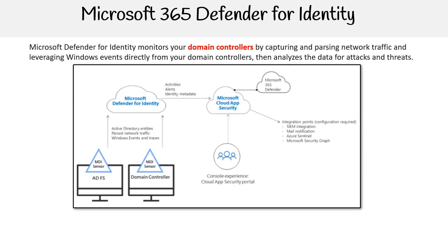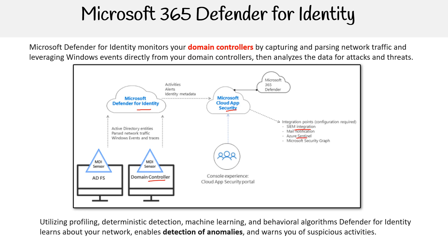Here is the architecture of it. First, we have our domain controller, then we have Microsoft Defender for Identity, which passes data to Microsoft Cloud App Security — now called Microsoft Defender for Apps — so that we can do some analysis. You can also pass it over to SIEM integration or Azure Sentinel for security information and event management.